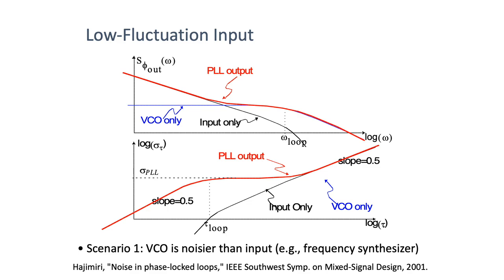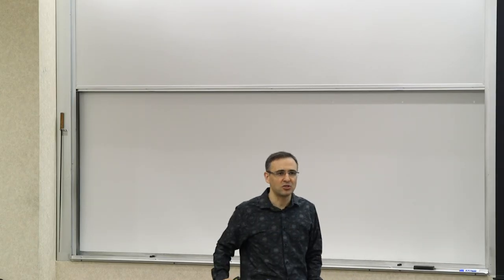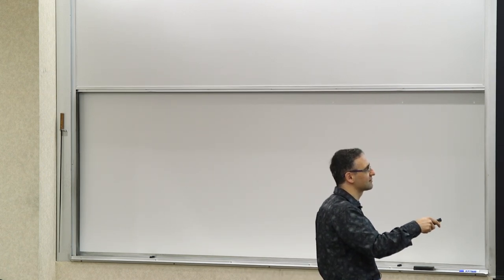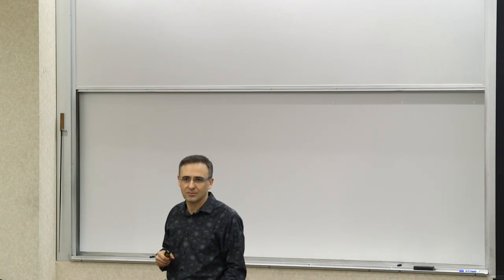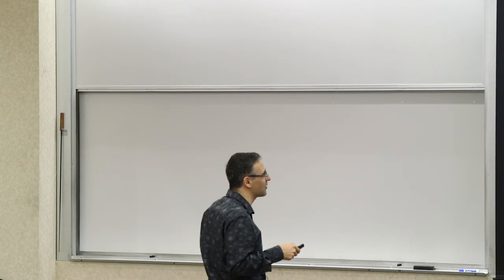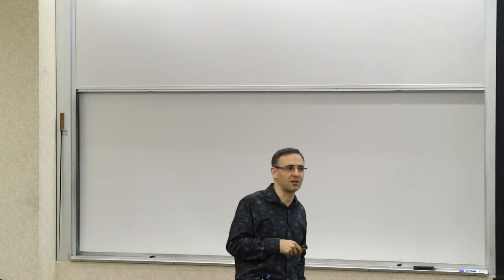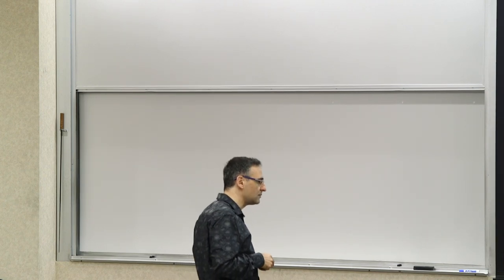At very low offset frequencies you get the phase noise of the reference, and at very high frequencies you get the phase noise of the VCO. There's a transition — for a first-order loop it becomes flat. Similarly for timing jitter in the time domain: for VCO only, you get something flat; for input only, you get the black curve. Combined, the timing jitter goes up, becomes flat — this is what we call the PLL jitter. This is the parameter people need to report for PLLs: they need to measure it in that flat region.